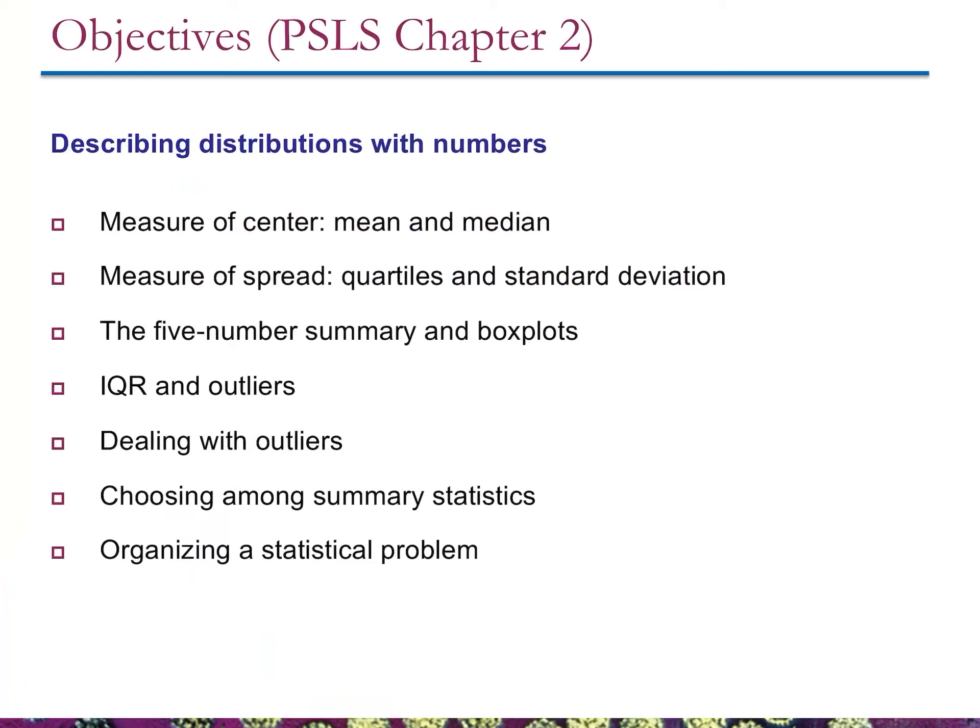We'll also cover measures of spread — how much variation on either side of the mean we have in the data set. We're going to look at what's called the five-number summary, which is a way to quantify that spread. We'll look at how we deal with outliers, which we touched on a little in the first chapter, and then choosing among the various summary statistics given the data set that we have.